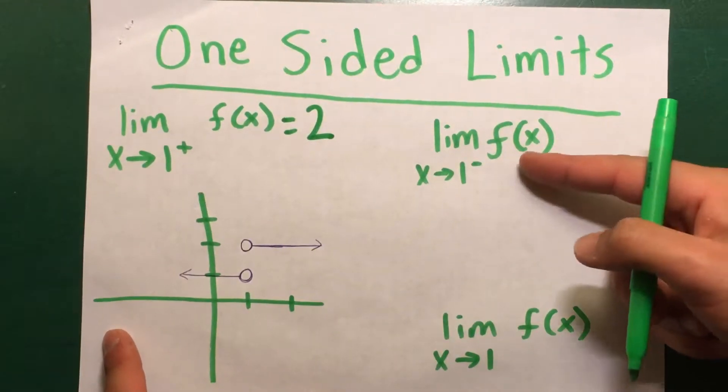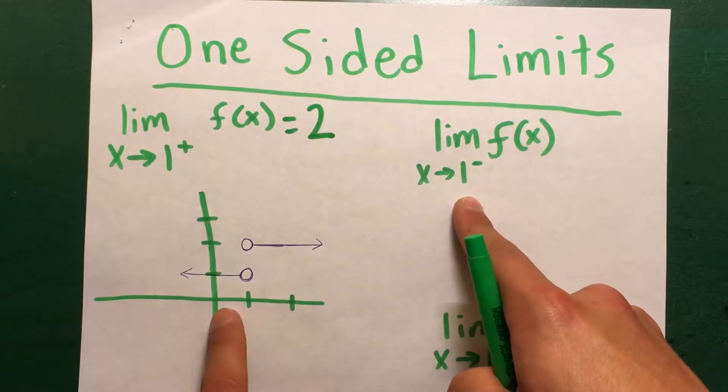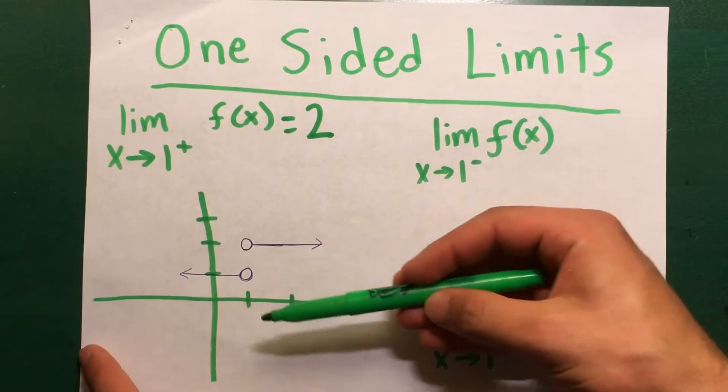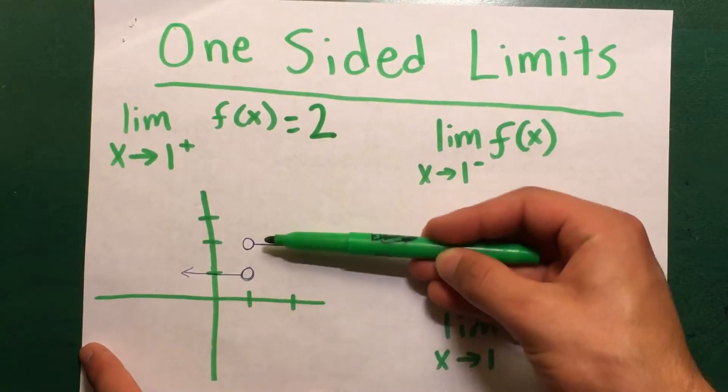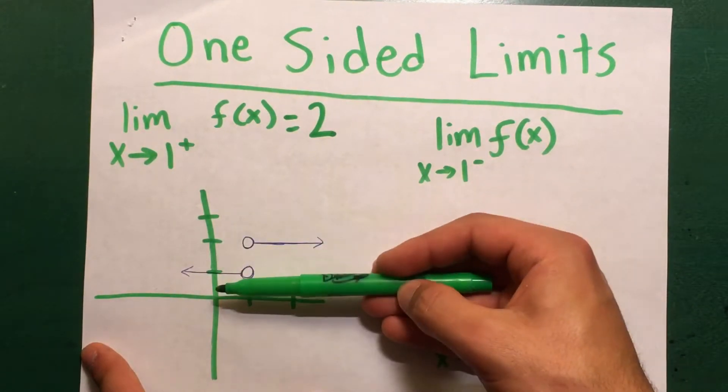And then this next one, limit as x approaches 1 from the left of f. So where is 1 right here coming from the left? See we can't use this function anymore because from the left of 1 it has nothing right here, it's empty. So we have to look at this.